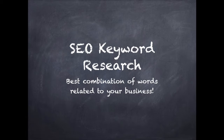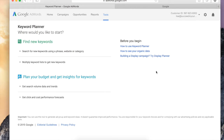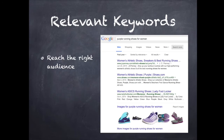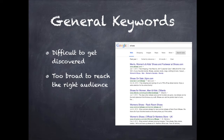Any content marketing requires search engine optimization keyword research to find the best combination of words and phrases that are related to your business and related to search. Although the Google Keyword Planner is the best free research tool available, today I'm sharing two ways to get your research done the fast way. Finding relevant keywords is your first step before creating any content if you want to reach the right audience. For example, if your keywords are too general, it's going to be difficult for your content to get discovered and it may be too broad to reach the right audience.